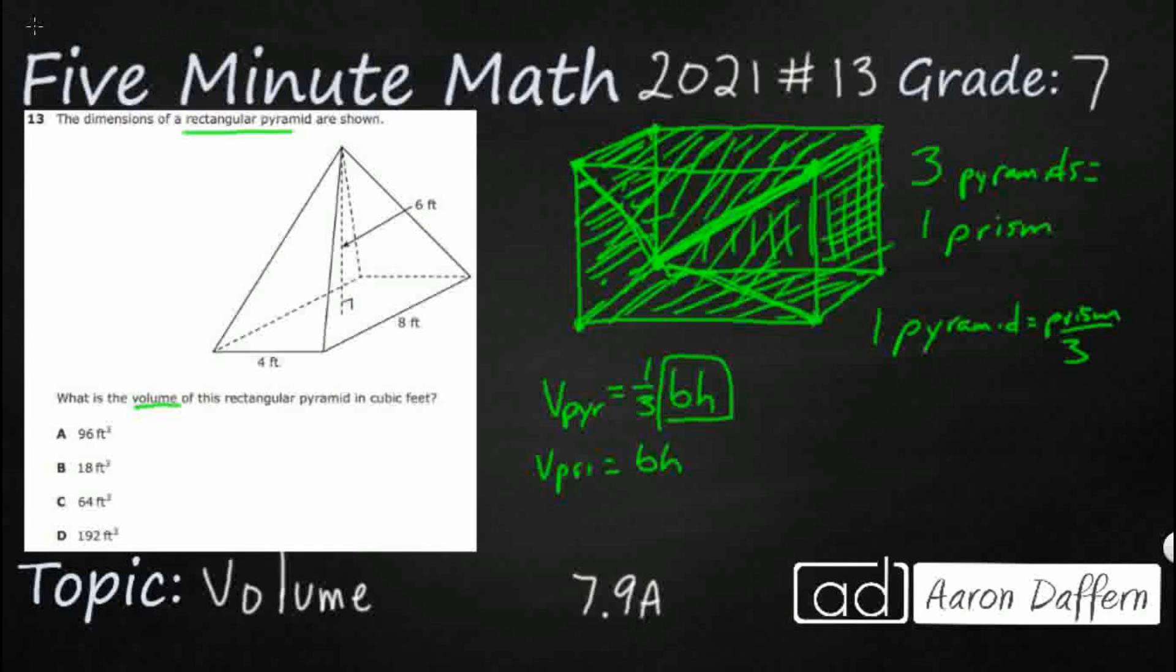So let's find the area of our base, right? Here's our base. It's four times eight. So base equals four feet times eight, right?